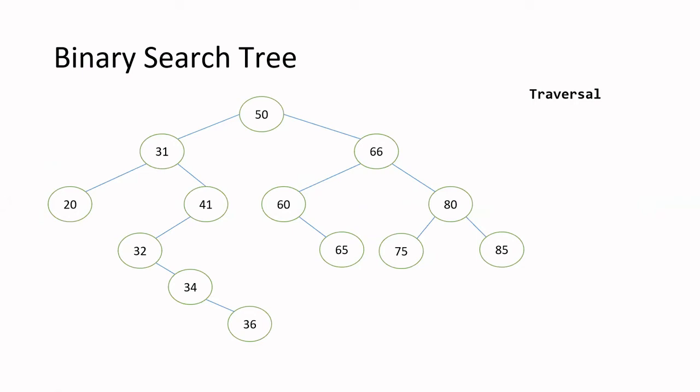We have something we didn't wrap up yet, which is the traversal part. This is also the thing that makes binary search trees different from other data structures — it is specifically designed to facilitate the searching process. The other data structures cannot do this. The traversal has three types.